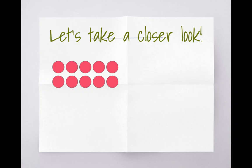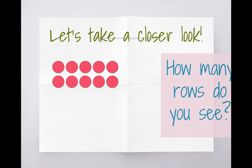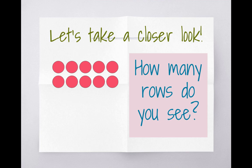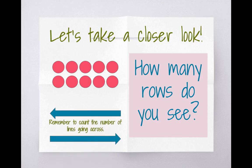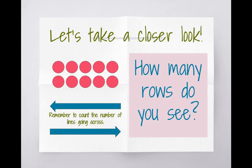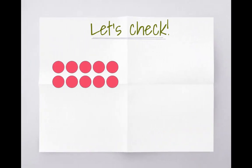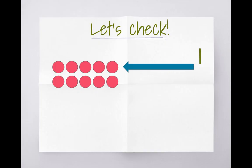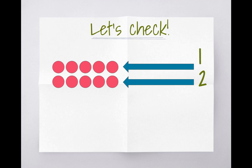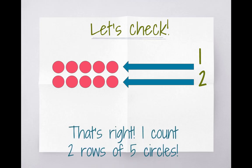Let's examine an array. Look at the array on the screen. How many rows do you see? Don't forget, rows go from left to right. Let's check your work — count the rows. I'm going to start with the first row and I see that it is one row of five. Then I see a second row that also has five. So I count two rows of five circles.